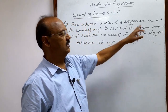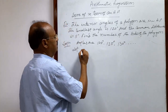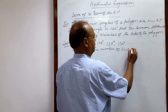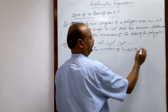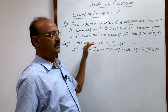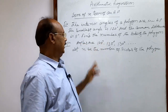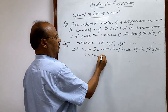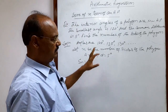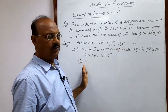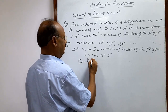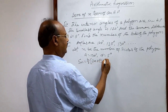We have to find the number of sides of the polygon. Let n be the number of sides of the polygon. Then what will be the sum of these angles? Here a is equal to 120 degrees, d is equal to 5. Since the polygon has n sides, the number of angles will also be n. So the sum of all these angles will be Sn = n/2 * (2a + (n-1)*d).